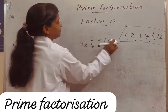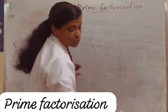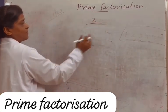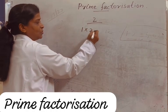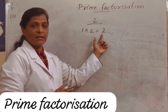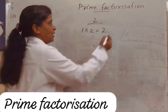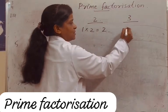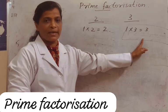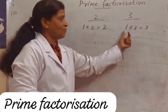For example, number 2. Which are the factors of 2? 1 into 2 is equal to 2. Is 2 divisible by any other number? No. So the factors of 2 are 1 and 2 only. Similarly, 3: 1 into 3 is equal to 3. Is 3 divisible by any other number? No. So the factors of 3 are 1 and 3 only.